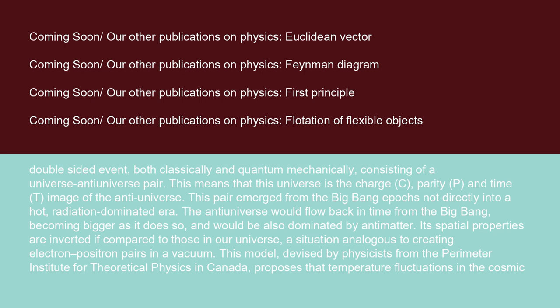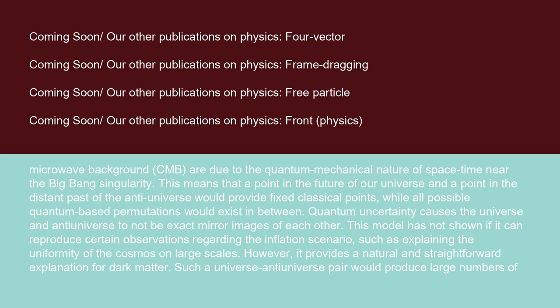This model, devised by physicists from the Perimeter Institute for Theoretical Physics in Canada, proposes that temperature fluctuations in the cosmic microwave background (CMB) are due to the quantum mechanical nature of space-time near the Big Bang singularity. This means that a point in the future of our universe and a point in the distant past of the anti-universe would provide fixed classical points, while all possible quantum-based permutations would exist in between.